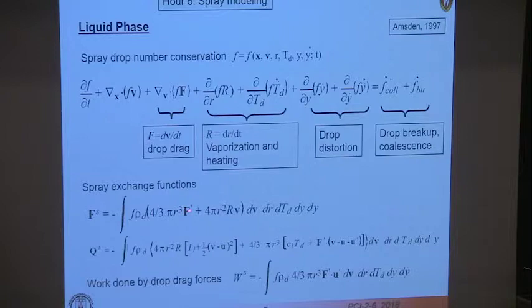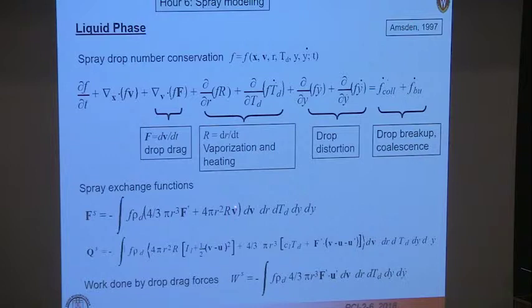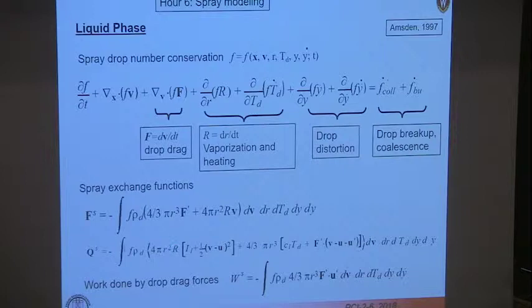For example, the drag forces on the droplets — the F term — times the probability of droplets of a certain size contributing gives the momentum transferred from the injected liquid to the gas. Similarly, the Stefan flow part, where the radius change causes vapor to leave the droplets at velocity, is a source of momentum transferred to the gas phase. Likewise for the energy equation: the droplet internal energy plus its kinetic energy is imparted to the gas phase as the droplet radius changes due to vaporization.